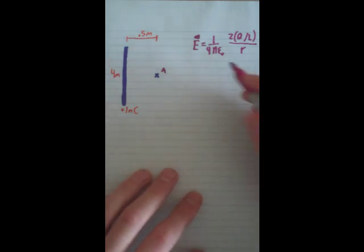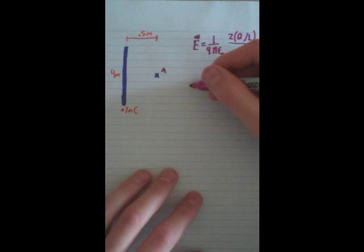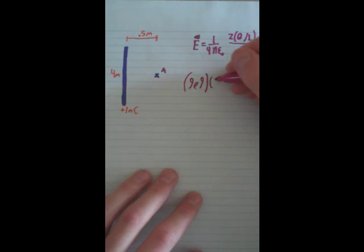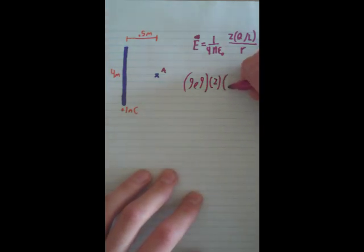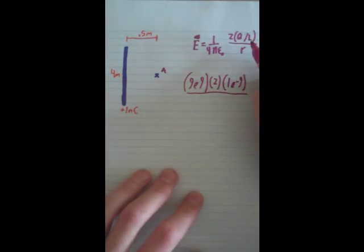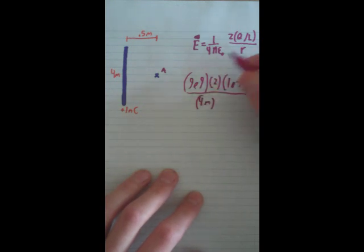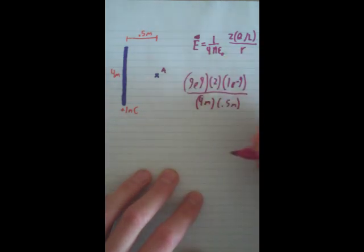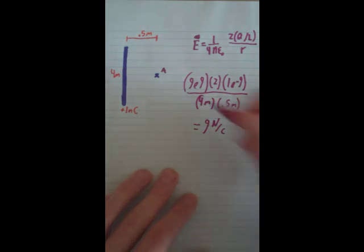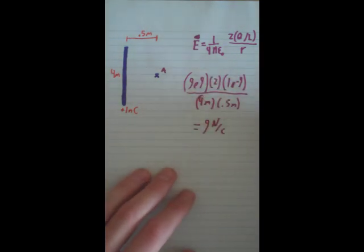Let's just do this real quick. We know this equals 9×10⁹. Times 2, times Q — and since this is nanocoulombs, we have to convert it to coulombs, so 1×10⁻⁹ coulombs — and this will be over L, the length, which is 4 meters, over R, which is the distance, 0.5 meters. Once you do all that out, it ends up equaling 9 newtons per coulomb. And that's how you find the electric field of a long rod.